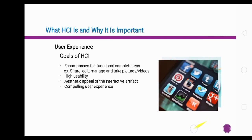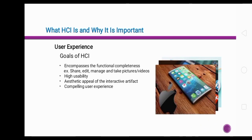High usability — when we say usability, it is the measure of how well a specific user in a specific context can use a product or design to achieve a defined goal effectively, efficiently, and satisfactorily. Next is the aesthetic appeal of the interactive artifact. This refers to the way a product looks and feels — for example, when a phone releases a new design, people buy it immediately because of its aesthetic appeal.